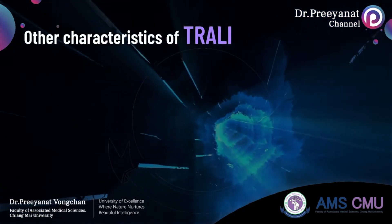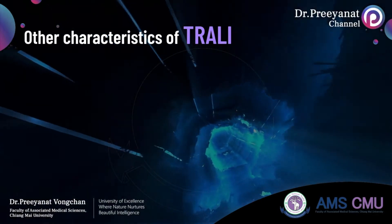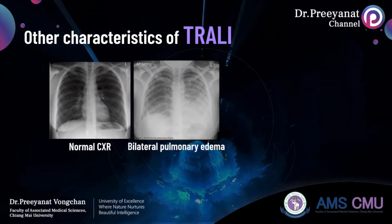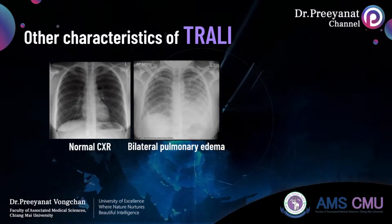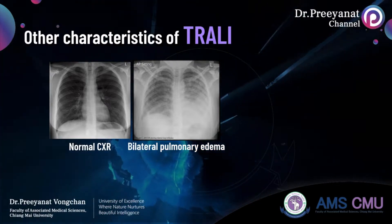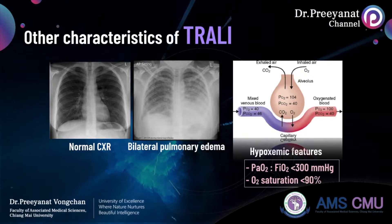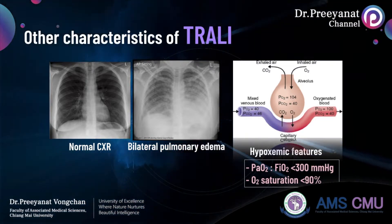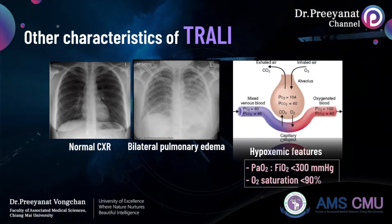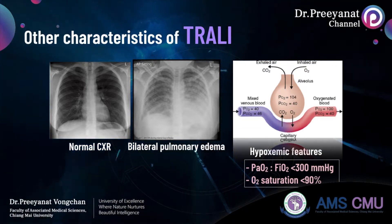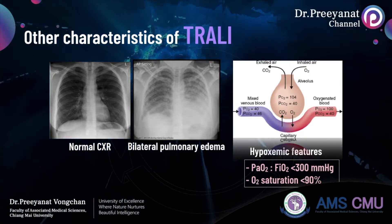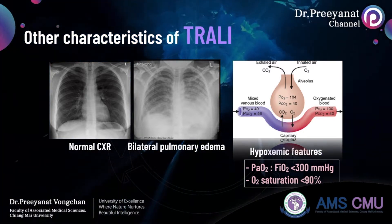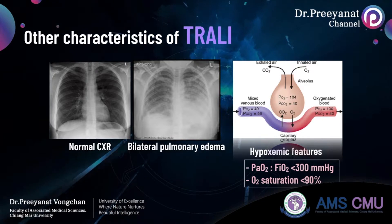Other markers supporting acute lung injury include: first, bilateral pulmonary infiltration as observed on chest X-ray; and second, characteristics of hypoxemia, such as partial oxygen to fraction of inspired oxygen ratio less than 300 mmHg, and oxygen saturation less than 90% on room air, along with other clinical evidence.